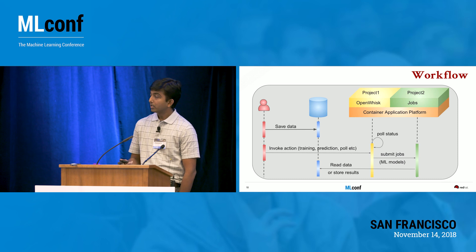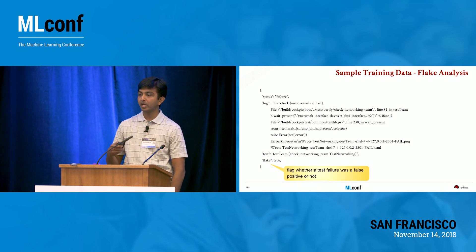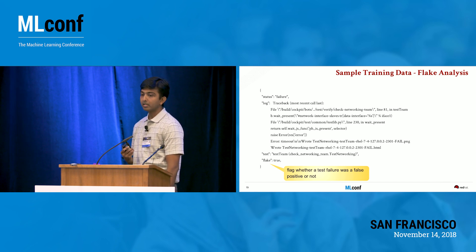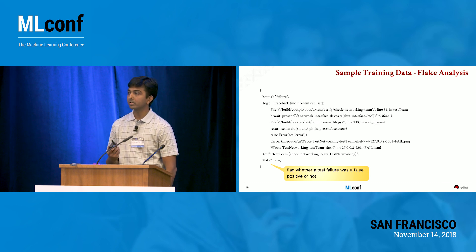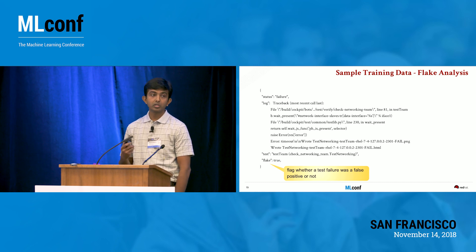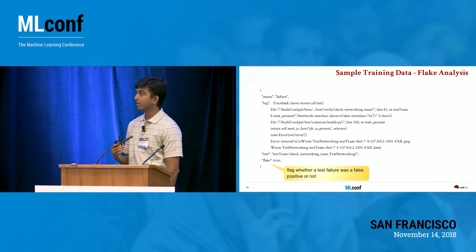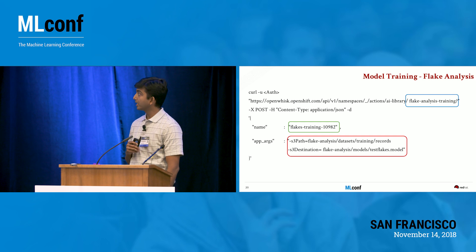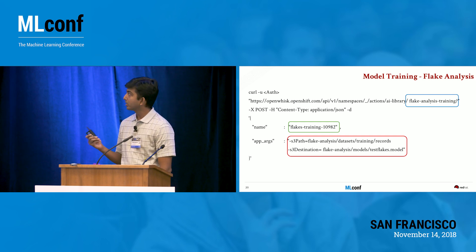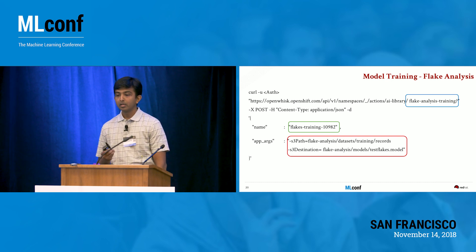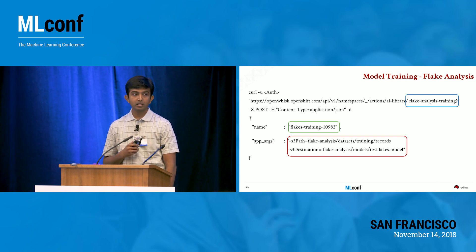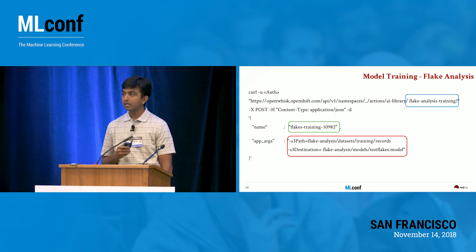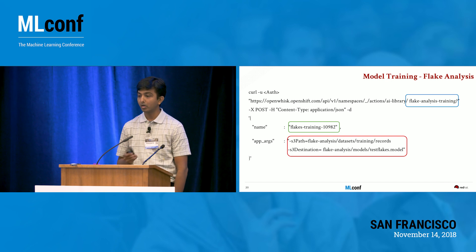Let me show the training data for flake analysis. A sample training data record tells you whether the test run was a failure or a success, the log information, and whether it was a false positive. There can be hundreds of thousands of such records. A user sends a simple curl request pointing to the flake analysis training endpoint, providing a unique identifier and parameters — such as where the training records are and where to store the results.